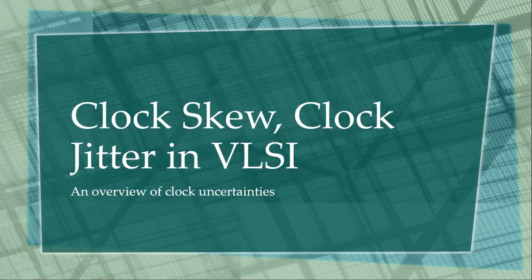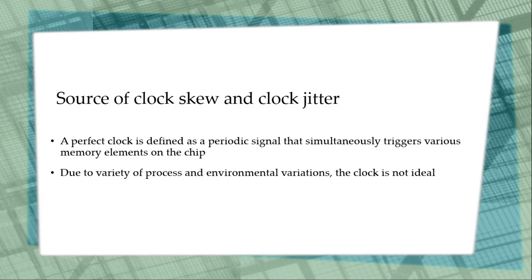If you want to look at the sources of clock skew and clock jitter: a clock is generated from a crystal oscillator which is off-chip and distributed through a network called a clock tree, consisting of PLLs (phase-locked loops), buffers, and inverters. A perfect clock is defined as a periodic signal that simultaneously triggers various memory elements on the chip, but due to a variety of process and environmental variations, this clock signal will not be ideal.